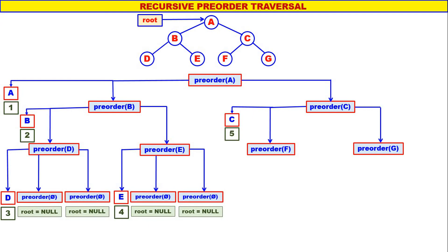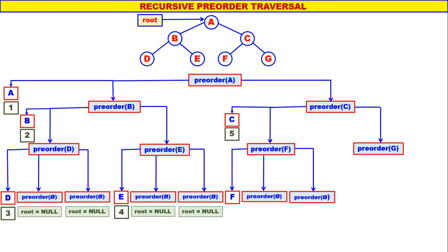Now we shall come to pre-order of F. F is not equal to null, therefore display F. Left of F is null, therefore pre-order of null. Right of F is null, therefore pre-order of null. F will be the sixth one to be displayed. Pre-order of null: root is null, nothing happens.